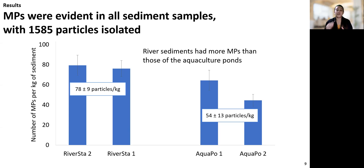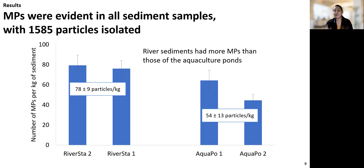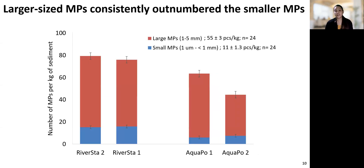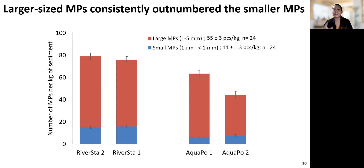Studies have shown a positive correlation between anthropogenic activities and MP abundance. The mismanagement of solid waste can cause plastics to be discharged directly into the river, resulting in these water systems serving as conduits of plastics to the oceans. Moreover, because river water has a lower density than seawater, it is likely that plastics undergo sedimentation while being transported. In all stations, it was evident that the larger-sized MPs, which range from 1 to 5 mm, consistently outnumbered the smaller MPs. This distribution of MP size can be related to the sources of microplastics and might also reflect the source's degree of degradation.